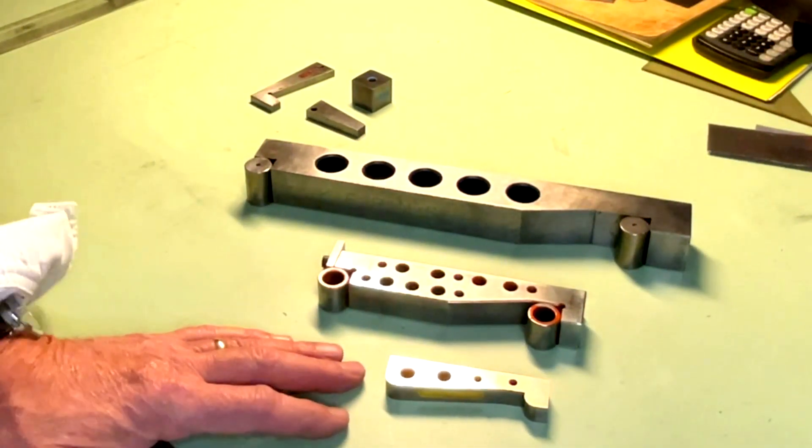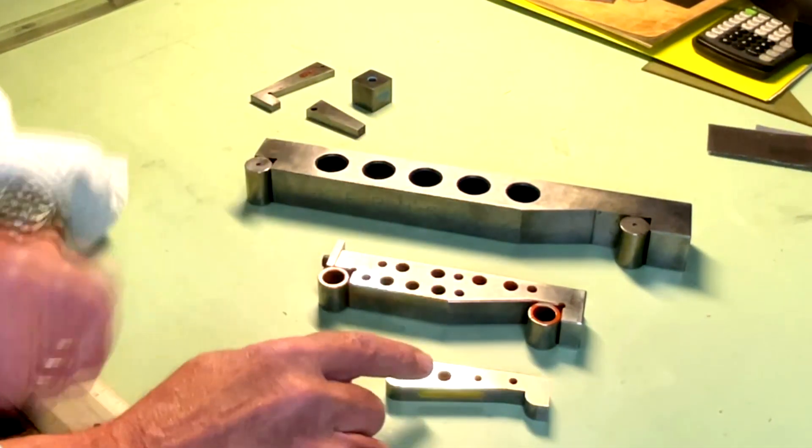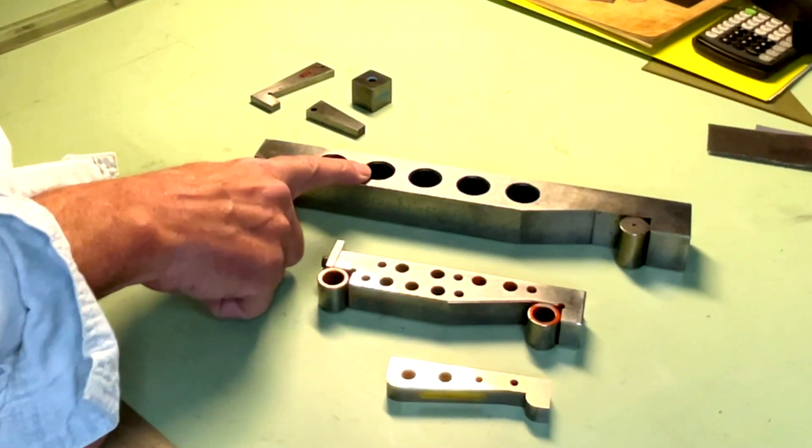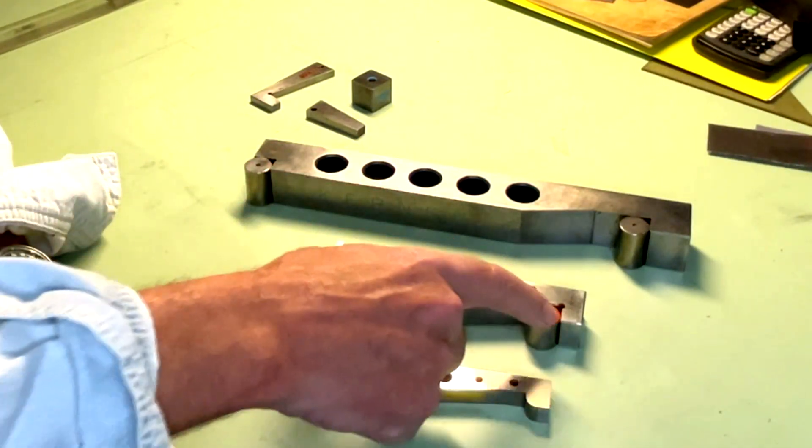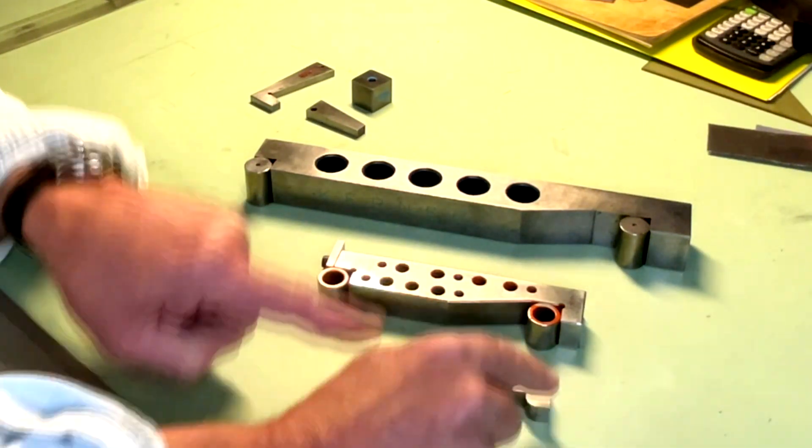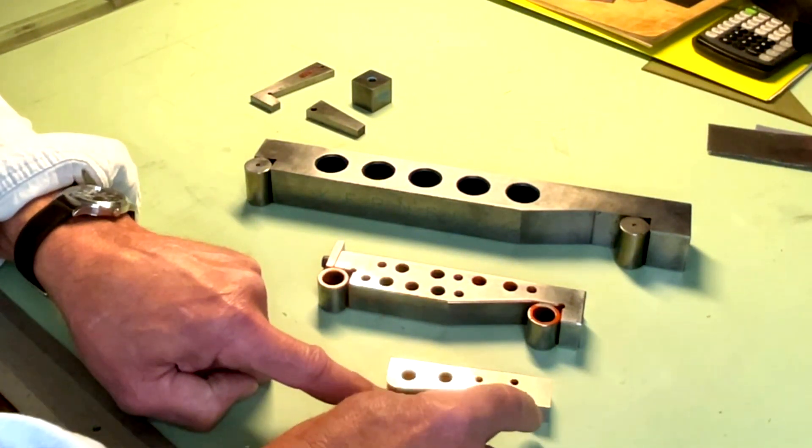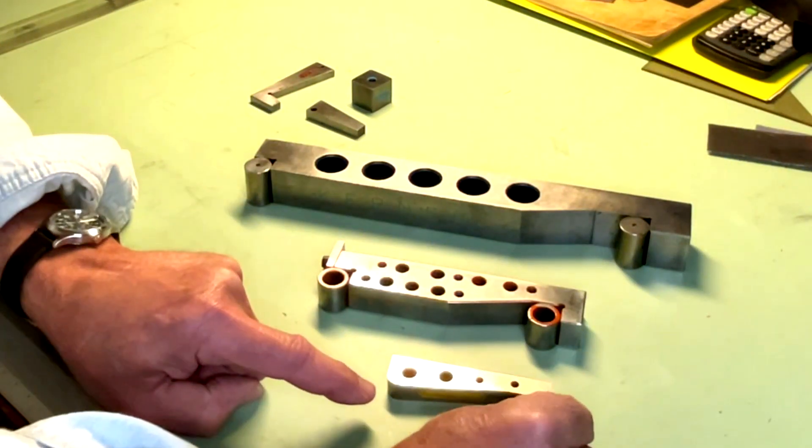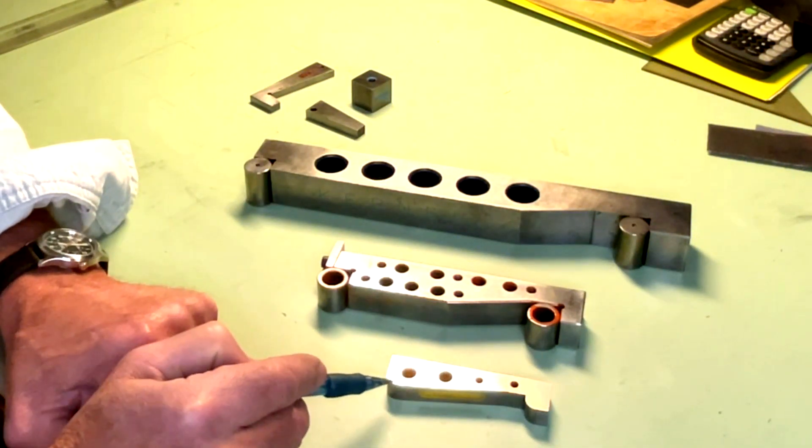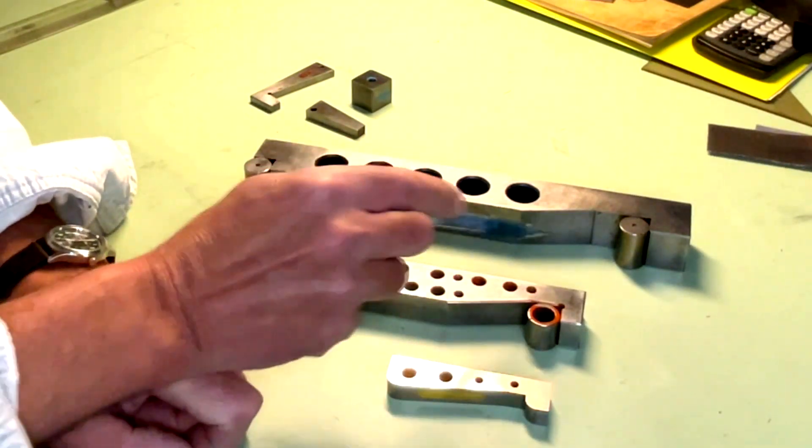The gold standard for setting up and checking angles is the sine bar. This is a 3 inch sine bar, this is a 5 inch sine bar, and this is a 10 inch sine bar. What constitutes the length is the distance between the center lines of the diameters. So the distance between this center line and this center line is 3 inches, here 5 inches, and here 10 inches.